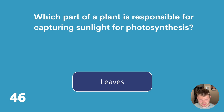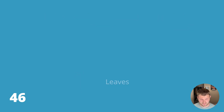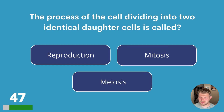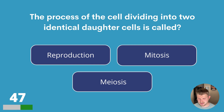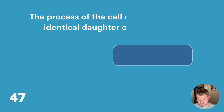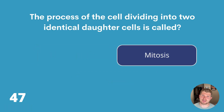Question forty-seven. The process of a cell dividing into two identical daughter cells is called reproduction, mitosis or meiosis? The answer is mitosis.